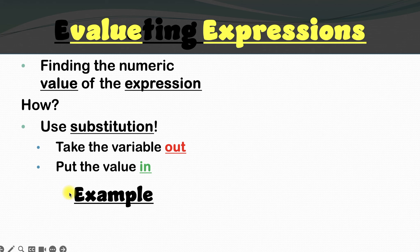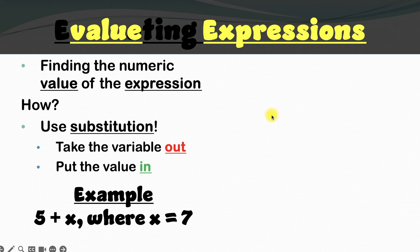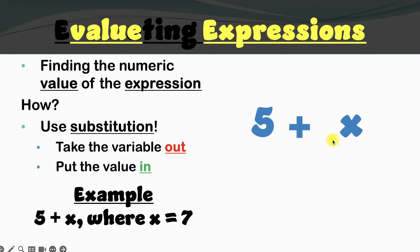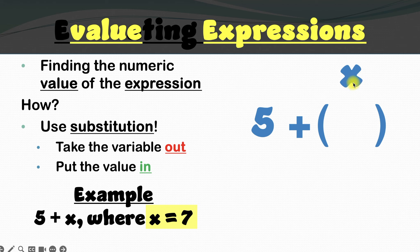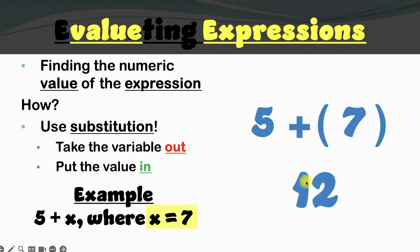Let's take a look at this example. Here we have 5 plus x, where x equals 7. I'll start by rewriting the expression. I like to put the variable inside parentheses — you'll see why that's important in the next example, and it also makes our work easier to read. We know that x equals 7, so I'll take this variable out, replace it with a 7, and put it back in. Now we've got 5 plus 7, which is 12. So when we evaluated 5 plus x where x equals 7, our value is 12.